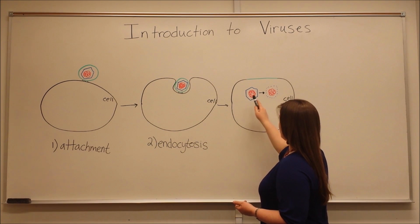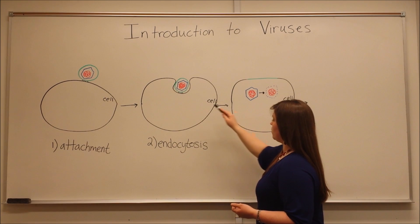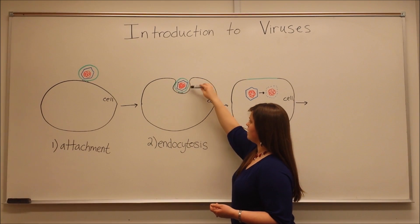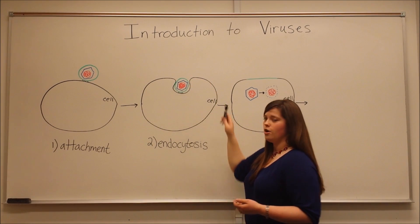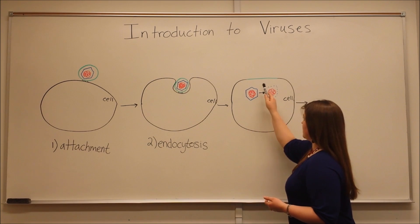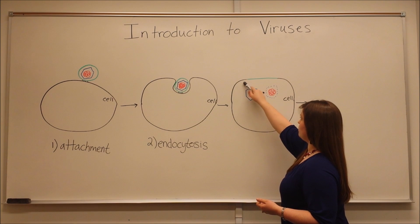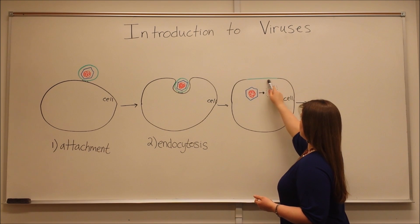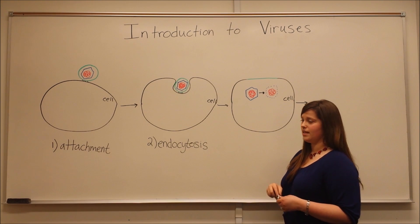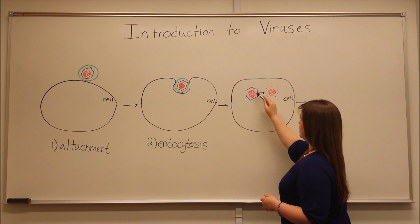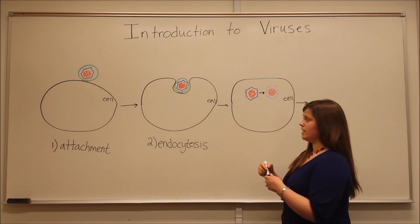Note that once the virus enters the cell, what has actually happened here is the green envelope of the virus fuses with the cell membrane. You can see here that we had what was once the cell membrane fused with what was once the viral envelope. This means that what actually comes inside the cell is just the capsid surrounding the nucleic acid core.